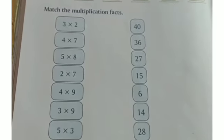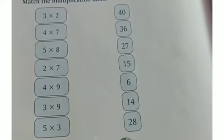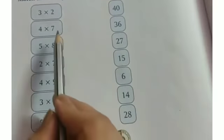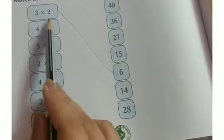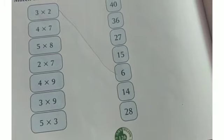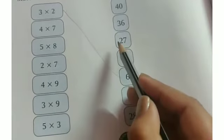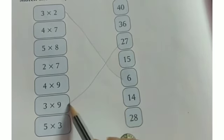So here match the multiplication fact. So 3 into 2 — 3 1's are 3, 3 2's are 6. The options are 40, 36, 27, 15, 6. So 3 2's are 6, so you will match 3 into 2 with 6. Now here 3 into 9 — 3 1's are 3, 3 2's are 6, 3 3's are 9, 3 4's are 12, 3 5's are 15, 3 6's are 18, 3 7's are 21, 3 8's are 24, 3 9's are 27. So here 27 — you have to match 27 with 3 into 9.